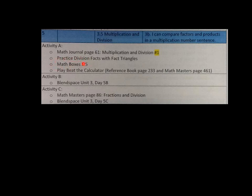Then you do math boxes 3.5, and finally beat the calculator. It's on reference book page 233, and you do need to use a score sheet, the Math Masters, page 461.